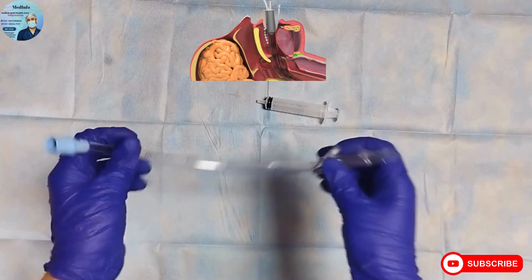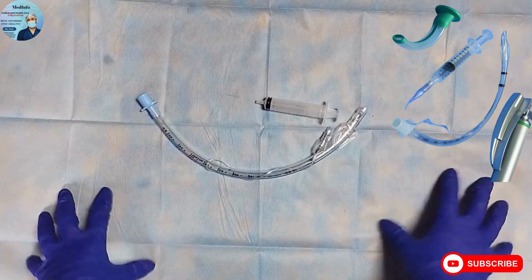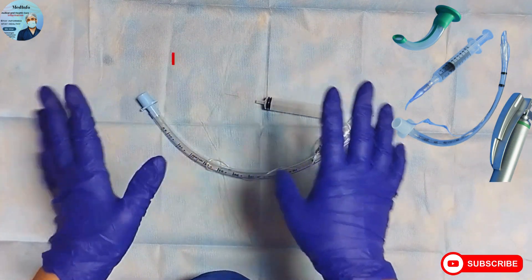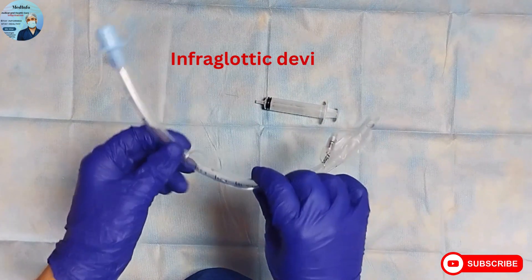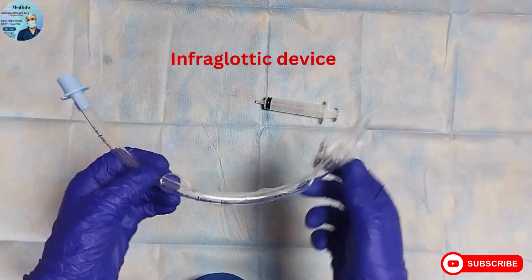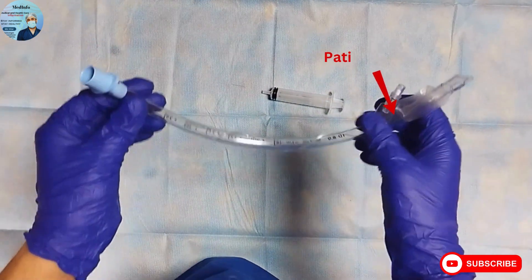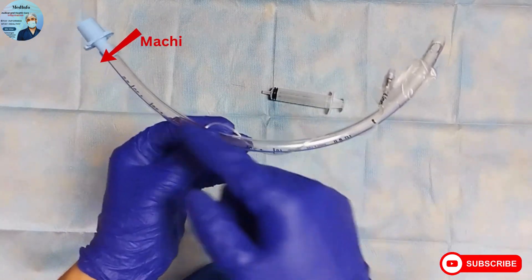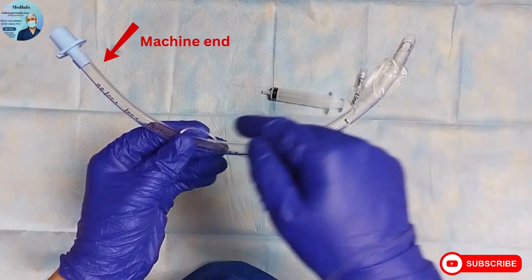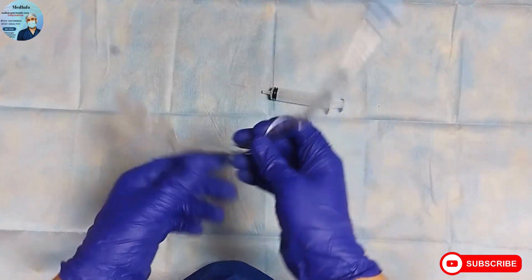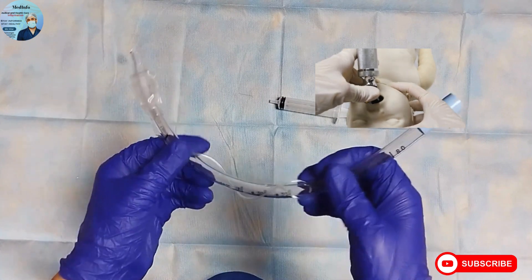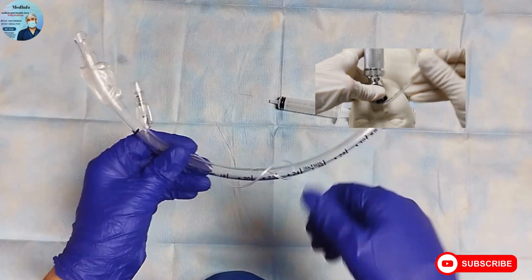Hello viewers, in today's video we are going to learn about parts of endotracheal tube, which is an infraglottic airway device. Endotracheal tubes have two ends: the distal end or patient end, and proximal end or machine end. It is a curved device which is placed through mouth or nostril and is used for intubation.